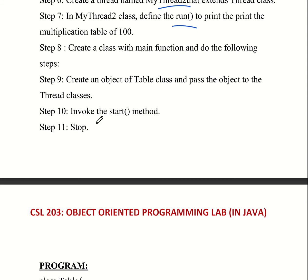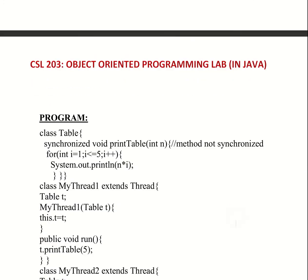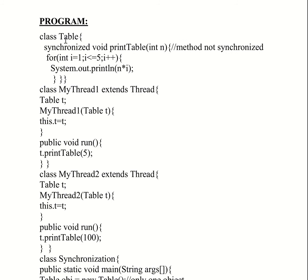When we invoke the start method, it in turn automatically invokes the run method. We define the run method in both threads. We have different ways to create threads — one method is to implement the Runnable interface. The synchronized method is called printTable, and this method handles the multiplication table printing.